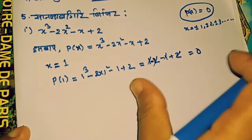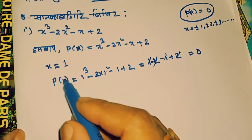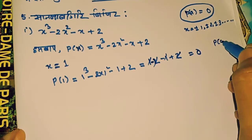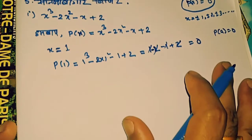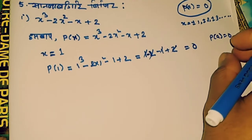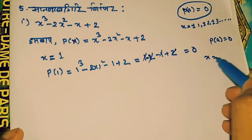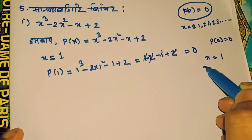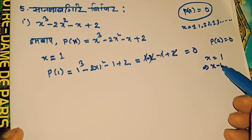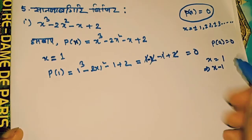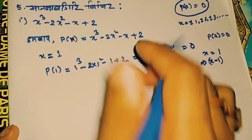So P is 0. We can see how P is equal to 0. So P is equal to 0. We can see how P is equal to 0. So x is equal to 1. x plus 1 is minus 1. x minus 1 is vx.